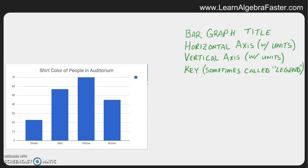Bar graphs are fairly simple once you understand the four key parts. The four key parts to a bar graph are: number one, the title; number two, the horizontal axis with units — the units are important; number three, the vertical axis with units; and number four, the key, which is sometimes called a legend depending on what book you're using or what teacher you have.